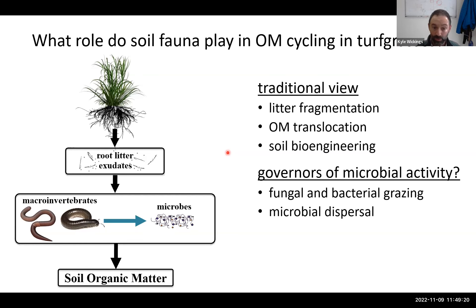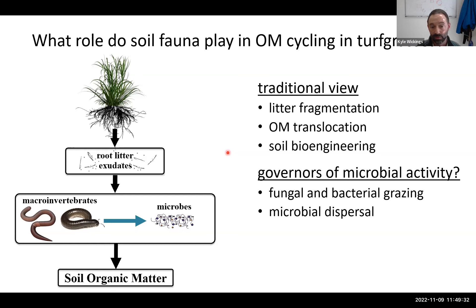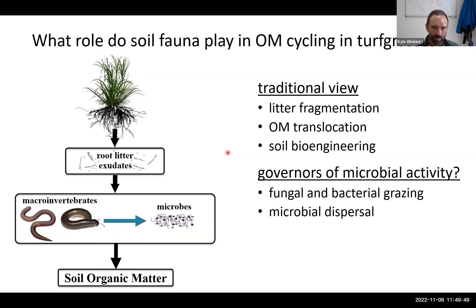Invertebrates also facilitate microbial dispersal — just as they move organic matter through soil, they can move microbes. They can do this in their gut, since many spores and cells pass through undestroyed and come out viable, and also passively on their cuticle. In this way they can be governors of the location, activity, and composition of the soil microbial community.